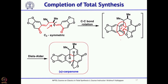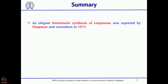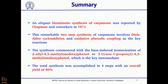Basically, from a commercially available starting material, carpanone was synthesized by Chapman in 1971 through what one can call a biomimetic route. This very elegant biomimetic synthesis involved four steps starting from the corresponding phenol, with oxidative phenolic coupling and intramolecular cycloaddition as the key steps. The overall yield was close to 50%, which is really an outstanding accomplishment for a natural product synthesis.